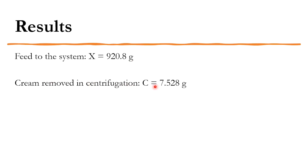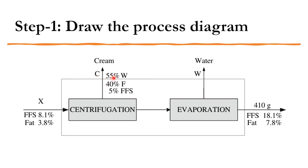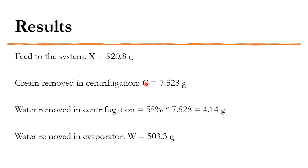The water removed in centrifugation is 55% of the cream, which equals 4.14 g — since the composition of water in cream is 55%, the total cream multiplied by 55% gives the water removed with the cream. Water removed in the evaporator w = 503.3 g, calculated from knowing x, c, and the product, leaving w as the remainder.